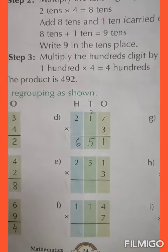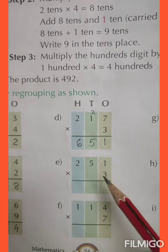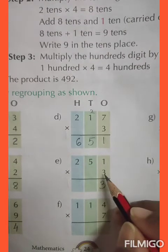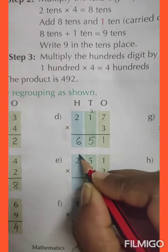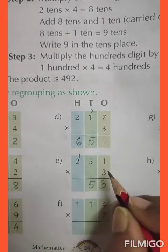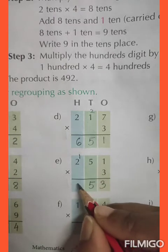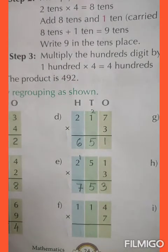Question number E: 251 into 3. 3 ones are 3. 3 fives are 15, 5 is written here and 1 is carried over. 3 twos are 6, and 6 plus 1 is 7. And the final answer is 753.